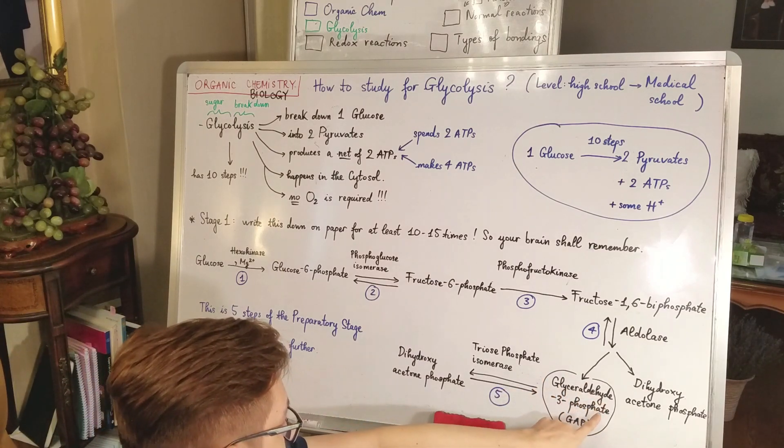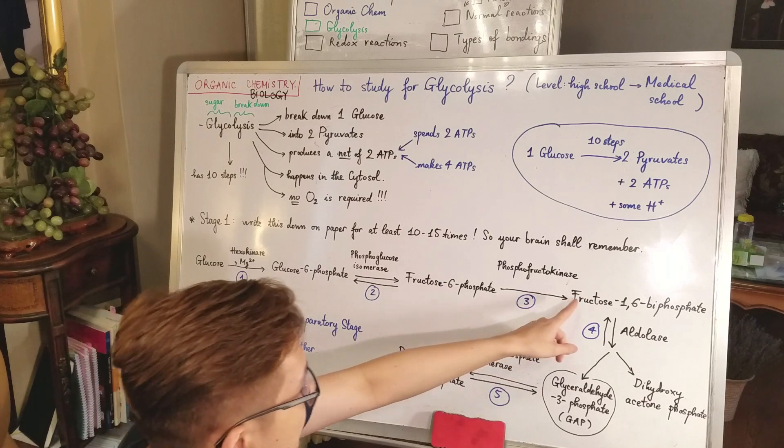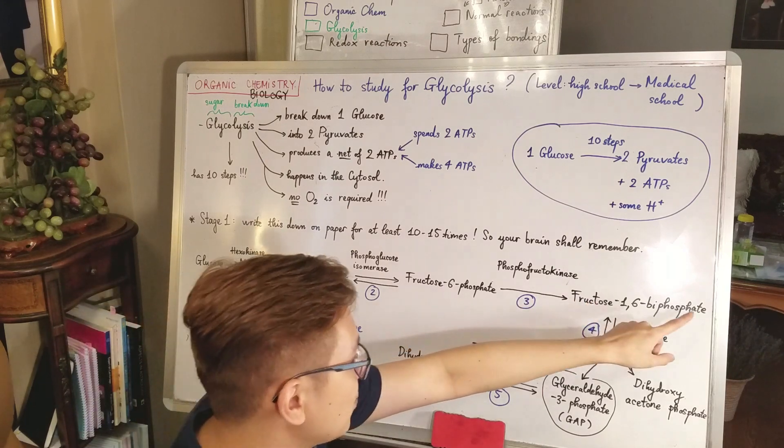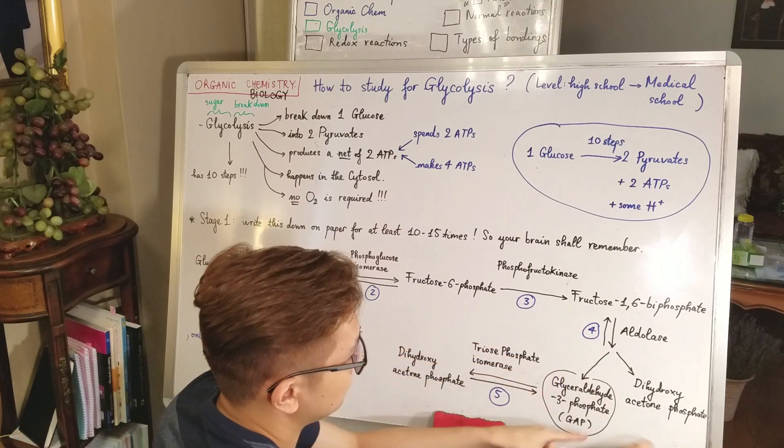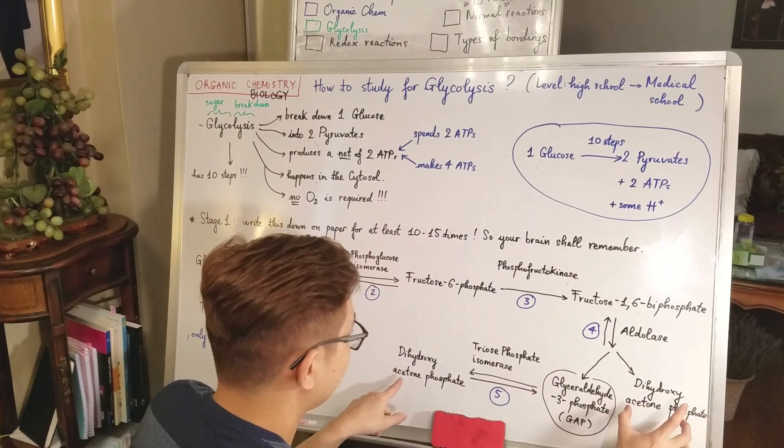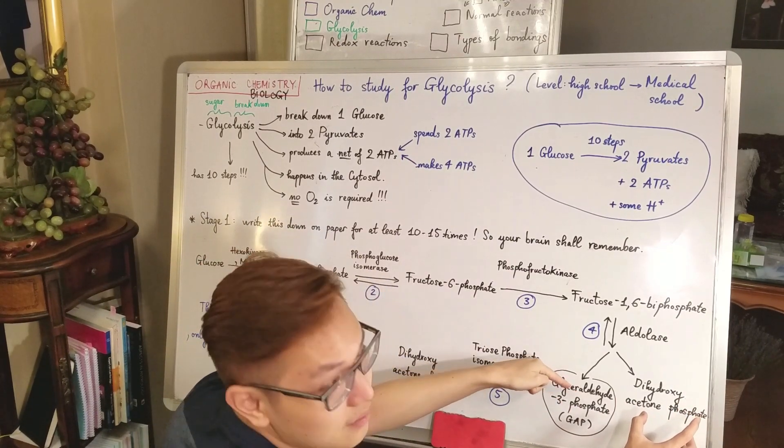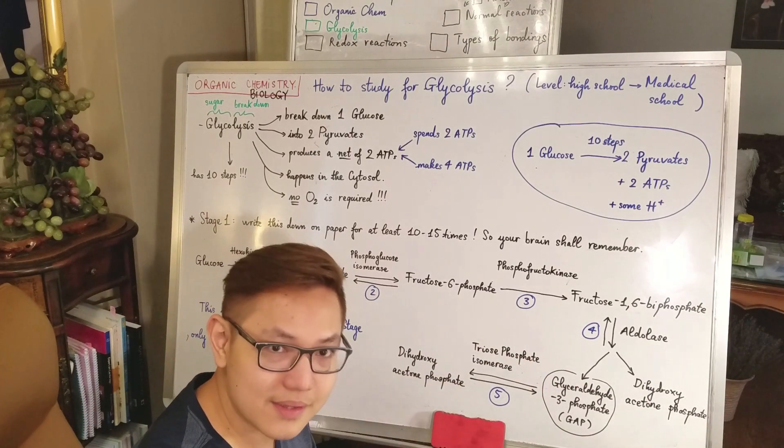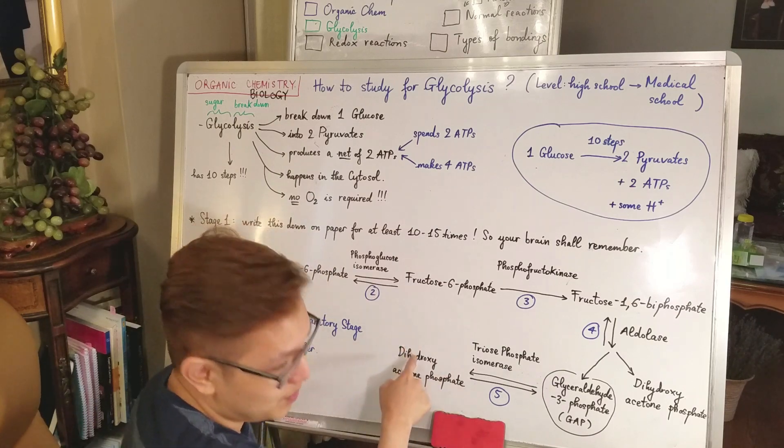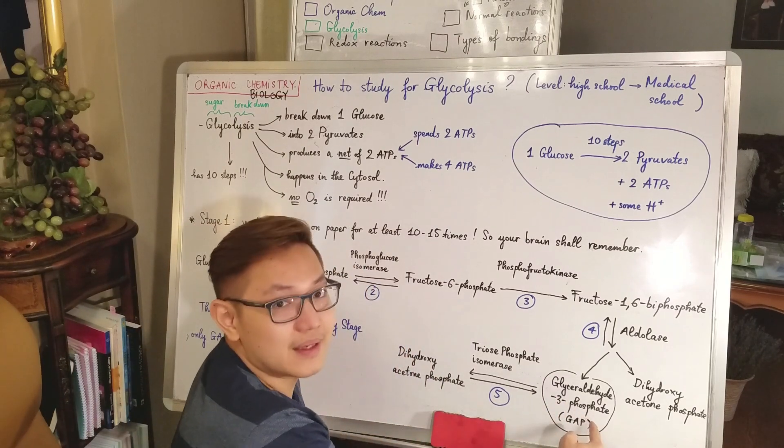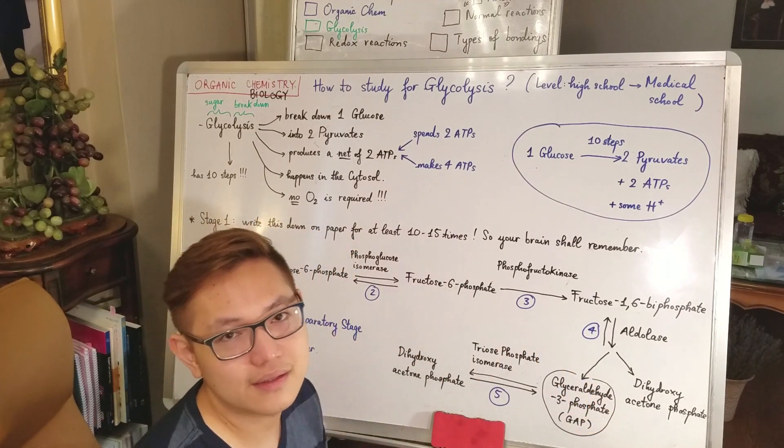As you can see, only this substance GAP, glyceraldehyde 3-phosphate, will continue on. It means that from step four, this fructose 1,6-bisphosphate will split into two different substances. But this substance is the same as this one and will be converted into GAP again. By other words, the dihydroxyacetone phosphate will have to be converted into GAP before this GAP can go on with steps six, seven, eight, nine, ten.